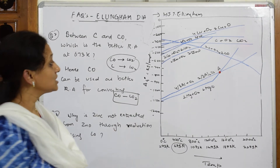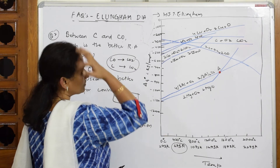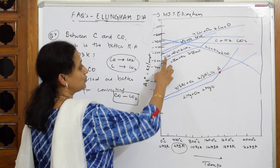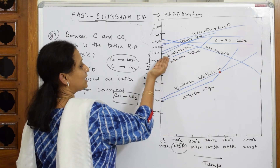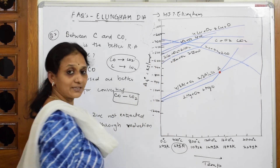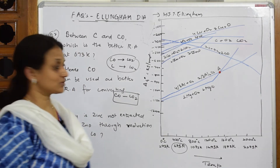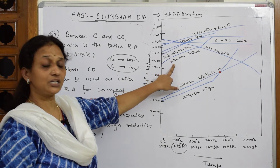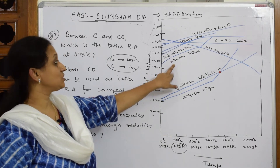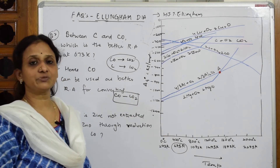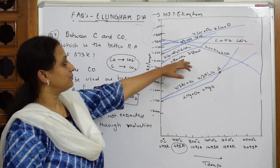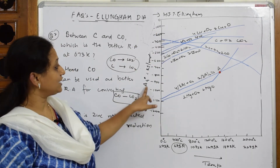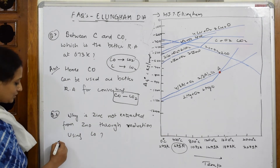Observe these are all delta G° values. When I see the CO value, this line is lying above, and zinc oxide is below it. The metals which are below cannot be reduced by those which are above, because of the higher Gibbs free energy values. So again: metals below cannot be reduced by agents above because of higher delta G° values.